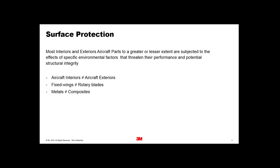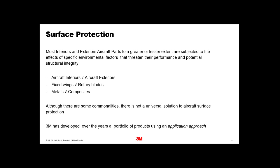Obviously different parts of the aircraft are going to be affected differently. Aircraft interiors are not exposed to as much of the external elements, but aircraft interiors do have their issues. Fixed wing and rotary wings obviously fly in different environments, so their erosion effects are going to be slightly different. Obviously the material has an impact, so metal is obviously more durable than composites. There's no one universal solution for protecting aircraft, and that's why we've developed over the years quite an extensive portfolio of products to cover a lot of applications.